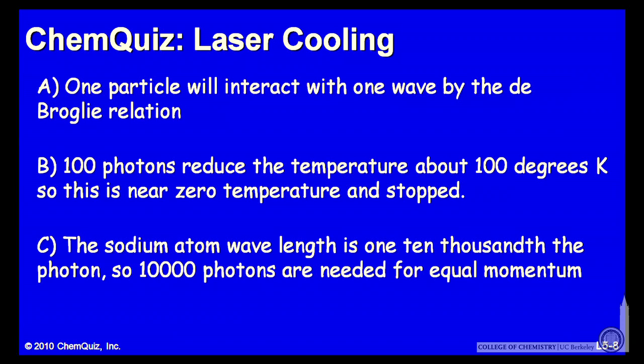Let's look at possible explanations for each answer. A: one particle will interact with one wave by the de Broglie relationship, so it'll be a one-to-one relationship. B: 100 photons reduce the temperature about 100 K — that's near zero, and the sodium atom should be about stopped. Or C: the sodium atom wavelength is about 1/10,000 the photon wavelength, so 10,000 photons are needed for an equal transfer of momentum. Think about those three explanations and make a selection.